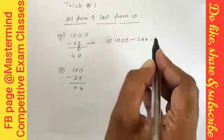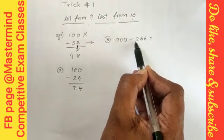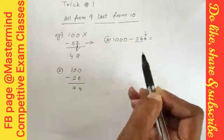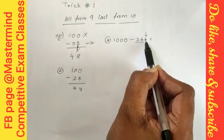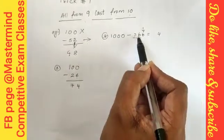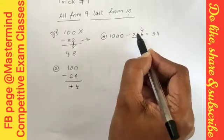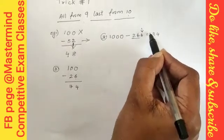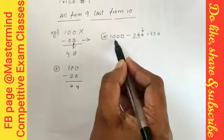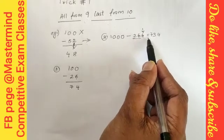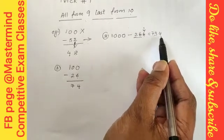Right, 1000 minus 266 gives you 734. 1000 minus 266 gives you 734 without any rough work in one line.